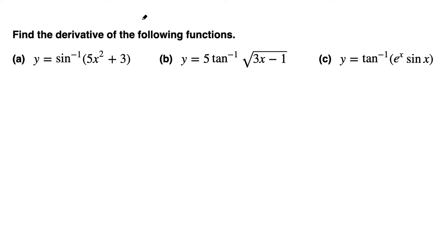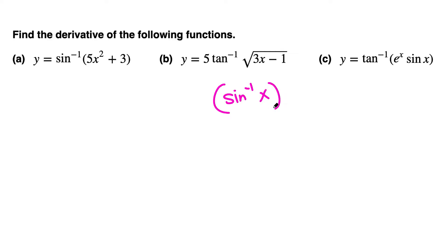Find the derivative of the following functions. In part a we have y equals sine inverse of 5x squared plus 3. We know that when we have sine inverse of x, its derivative is 1 over the square root of 1 minus x squared.